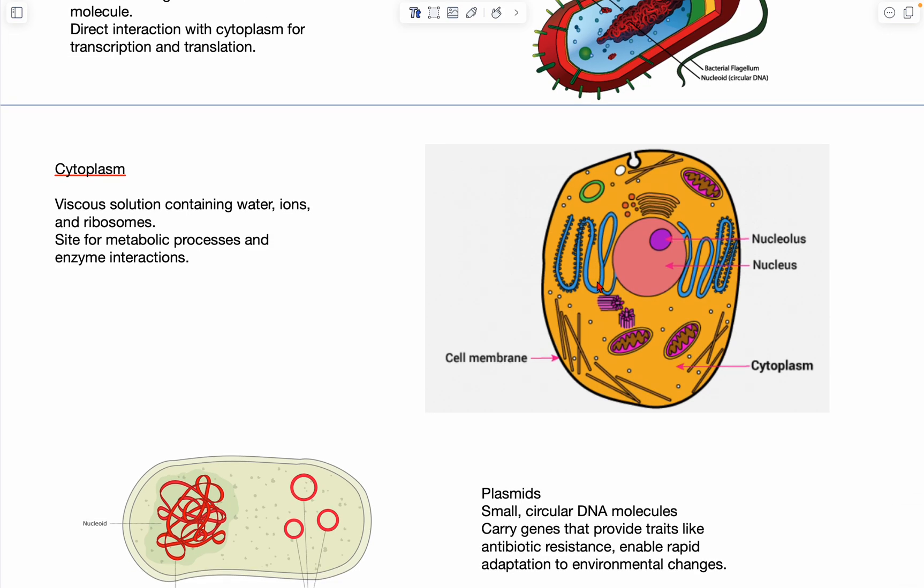Okay, and now for cytoplasm. Cytoplasm is basically just sort of a viscous solution, which contains all sorts of things. It contains water, ions, proteins, ribosomes, and it basically is where metabolic processes occur. So, one of these processes, for example, is just glycolysis, which is essentially the breakdown of glucose to produce ATP or energy.